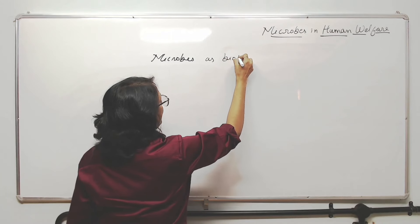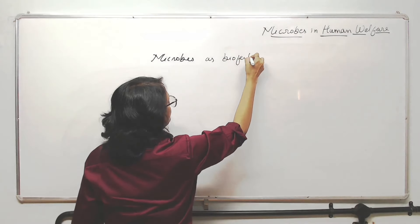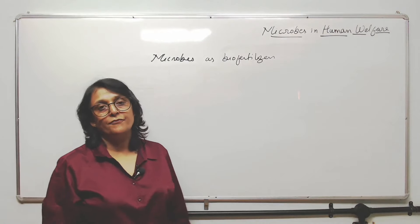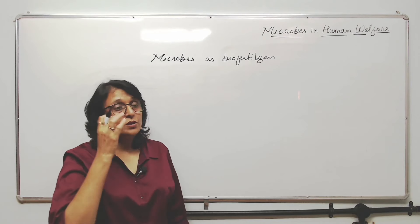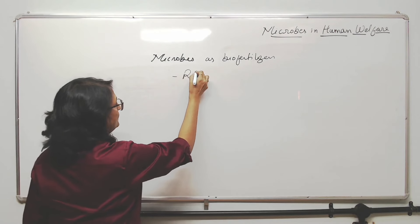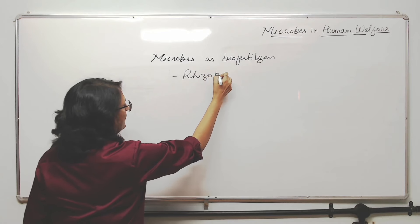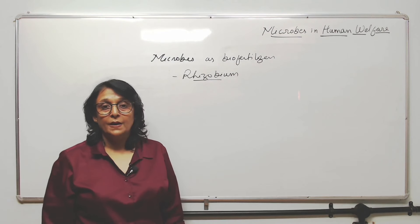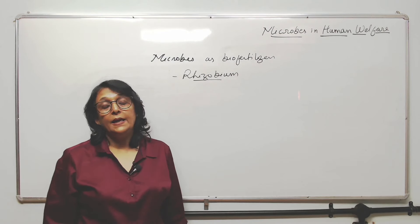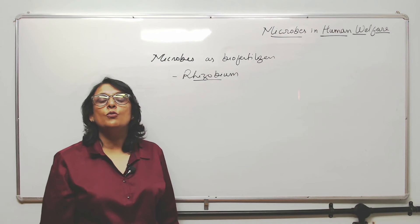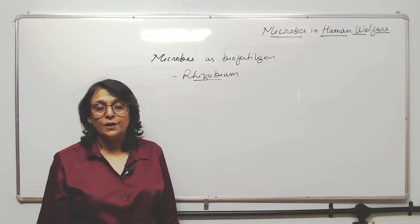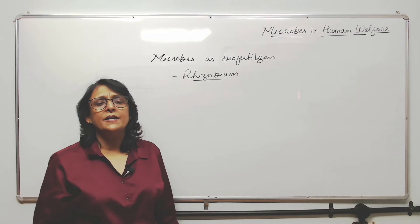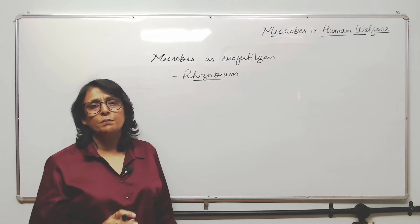There are some biofertilizers which we are familiar with and aware of. One is Rhizobium. It is found symbiotically. There are different types of Rhizobium, like Rhizobium trifolium and Rhizobium leguminosarum. They are found in symbiotic association with different plants.